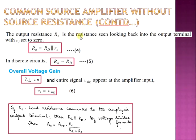The output resistance R0 is the resistance seen by looking back into the output terminal by setting the input voltage to zero, as we have seen in the previous tutorial on amplifier characteristics. R0 = Rd ∥ r0, denoted as equation number 4. For discrete circuit amplifiers we ignore small r0 and represent the output resistance R0 as equivalent to Rd, denoted as equation number 5.